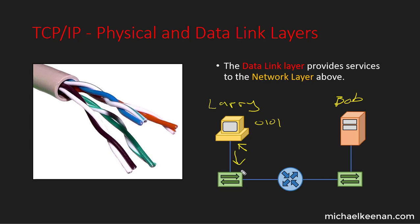The switch looks up its MAC address table to determine which port to forward the information out of, then sends it to the router. The router is a layer 3 device because Larry may be on a different local area network than the server. The router decapsulates the frame, looks at the IP address, and sends it to the switch on the other side. That switch determines which interface to send it out of and forwards it to the server, which has a network interface card. The server then undoes the process going up the protocol stack, sending it to the application — something like Apache or Nginx — and then responds back to Larry.